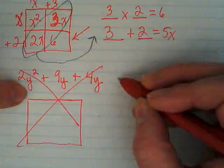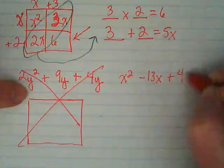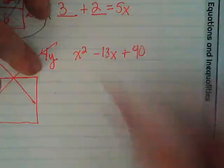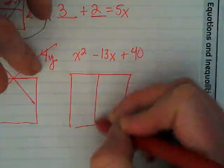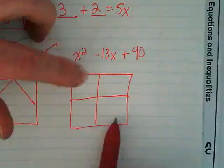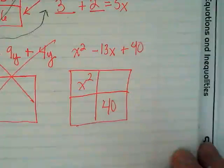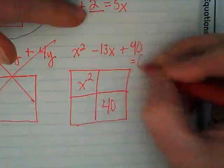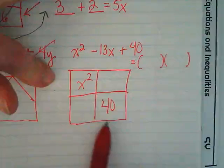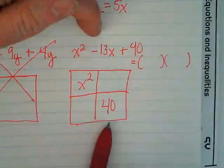Let's do x squared minus 13x plus 40. When I look at this trinomial, I know the first term and the last term can go into the boxes, right? So I get x squared and 40. This is going to equal two binomials that we figure out by finding what times what gives us 40, where those same two numbers added together give us negative 13.